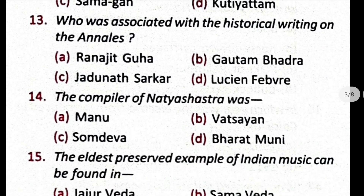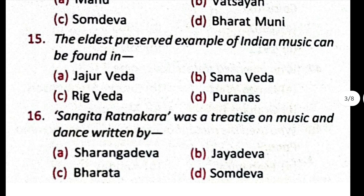Question number 13: who was associated with historical writing on the Annales? The correct answer is D, Lucien Febvre. Question number 14: the compiler of Natyashastra — the correct answer is option D, Bharat Muni. Question number 15: the earliest preserved example of Indian music can be found in — option B is correct, Samaveda.